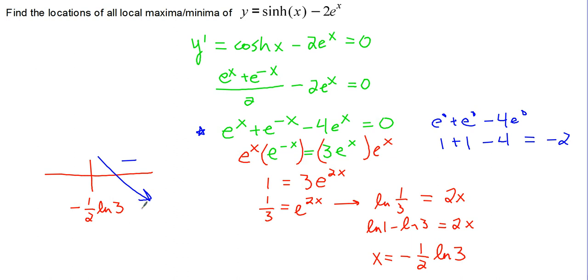And then we'll have to check something on the left-hand side of negative 1 half natural log of 3. Now, when these are combined together, we've got negative 3e to the x plus e to the negative x. And if we plug a negative, let's say negative 10 into this, that's a pretty straightforward number to plug in.